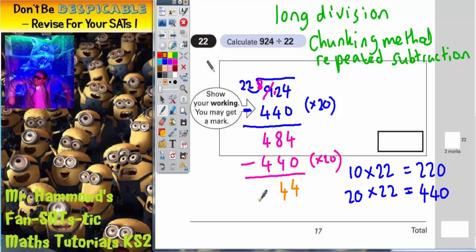So we're now down to 44. Now at this point, we should be able to spot what happens next. How many 22s can I subtract from 44? Well, 1 22 is 22. So two 22s are 44. So actually, this time, I can take two 22s away, which is 44.